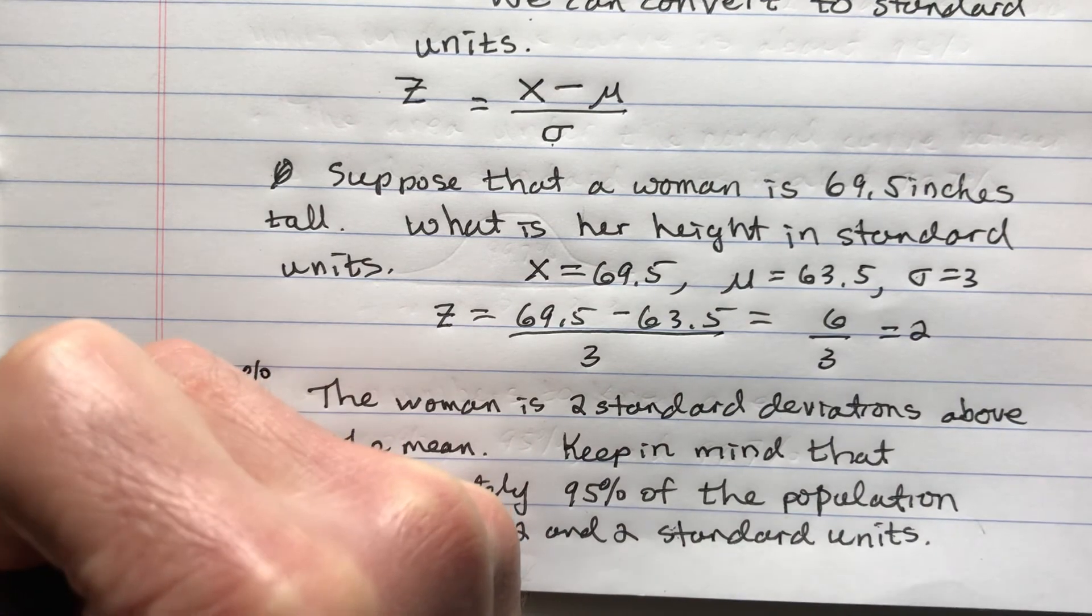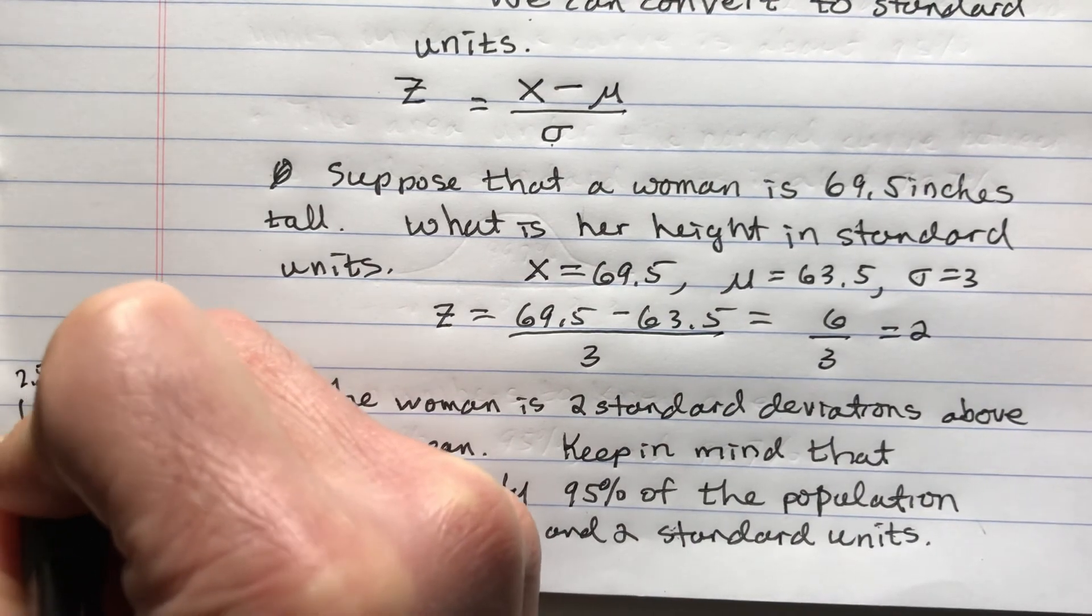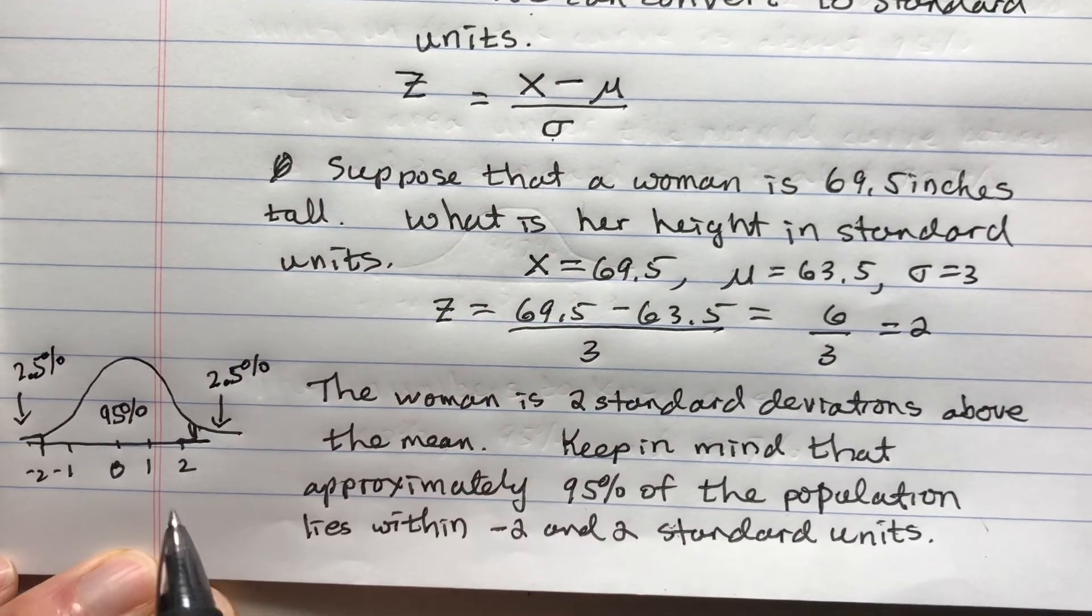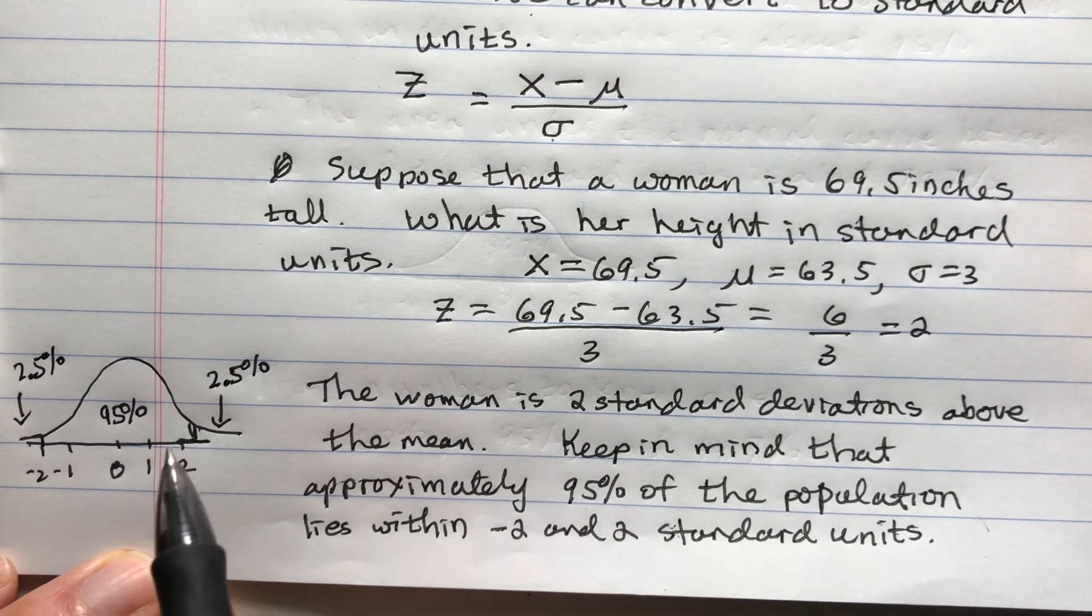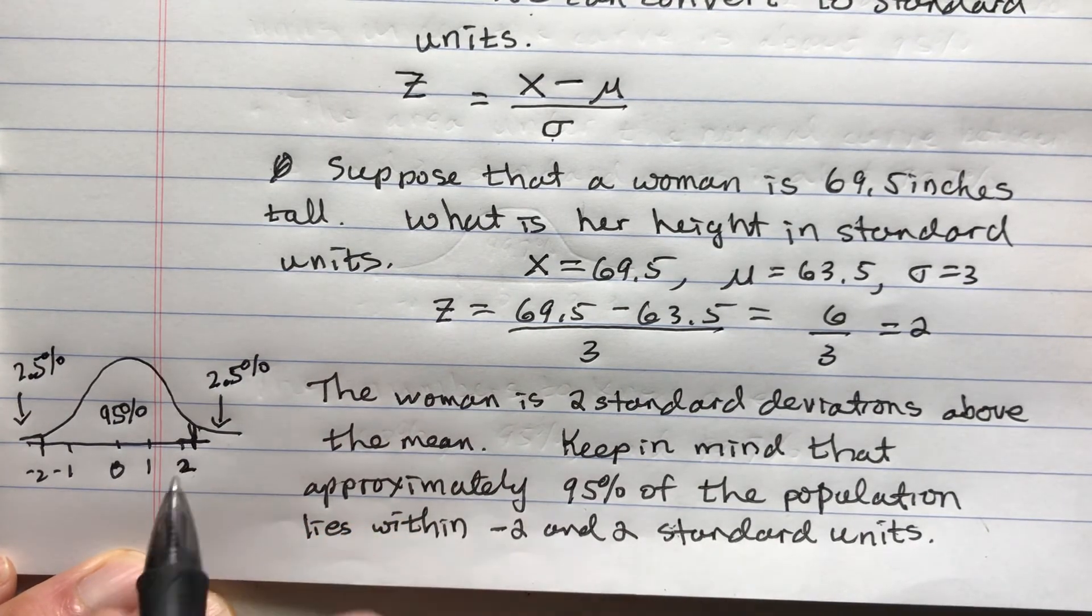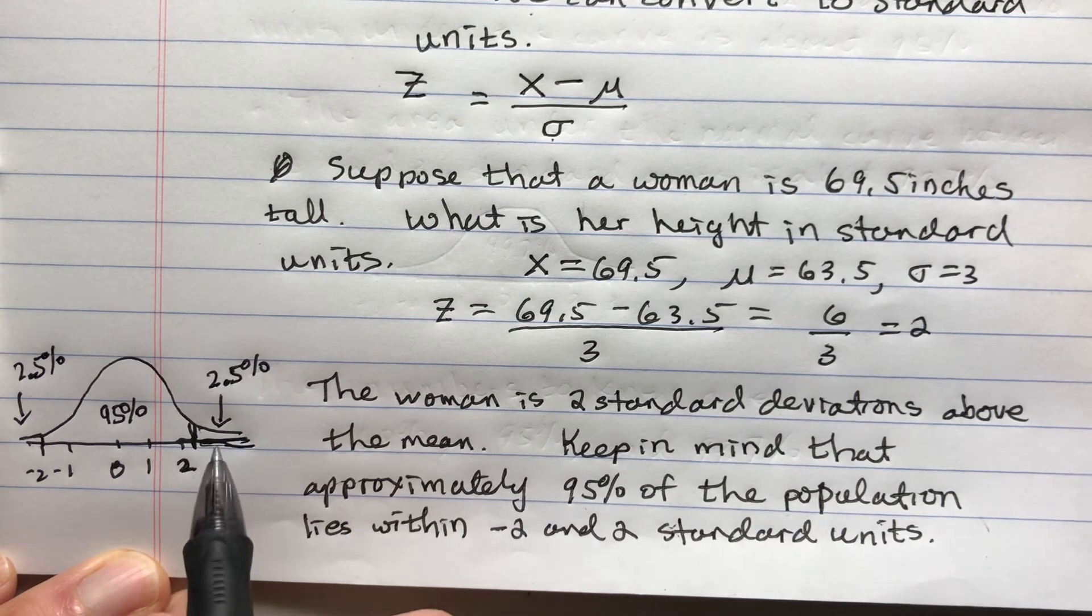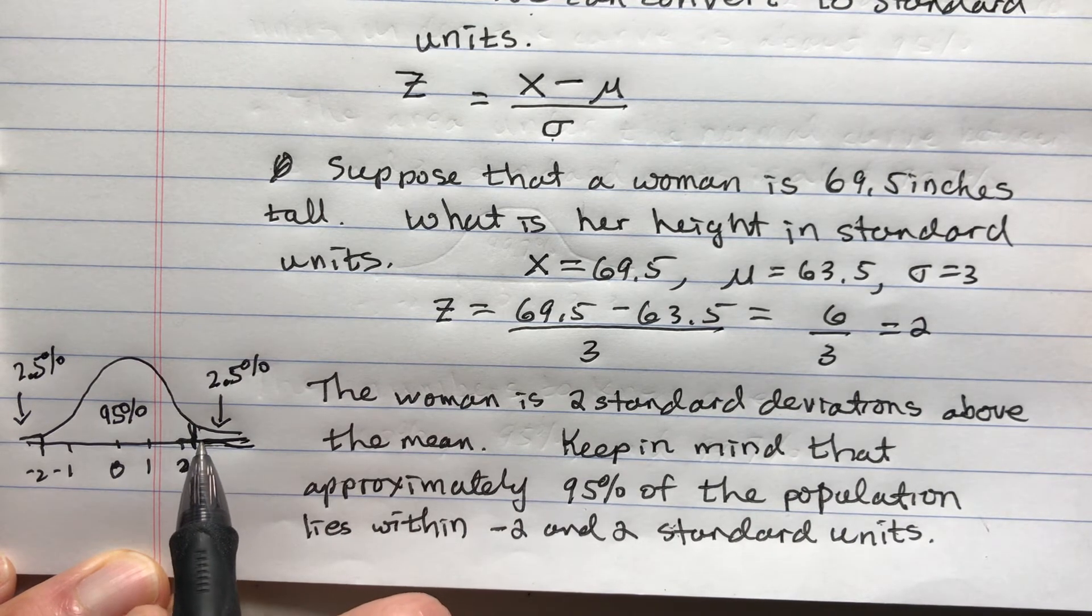Half of 5% makes 2.5%. Over here, this is also 2.5%. So one way to look at this is that only 2.5% of the population is her height or taller.